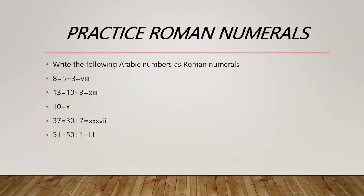37 is equal to 30 plus 7. 30 is written as three X's. 7 can be split into 5 plus 2, so we get VII. 51 equals 50 plus 1. We know that 50 is written in Roman numerals as L, and 1 is an I, giving us LI.